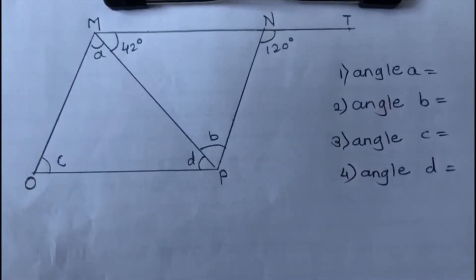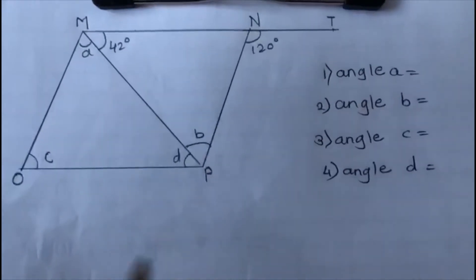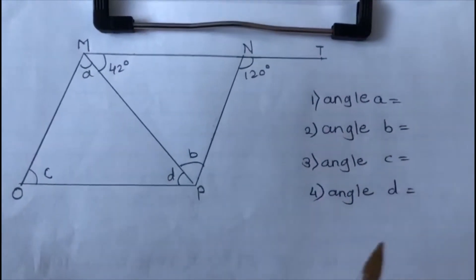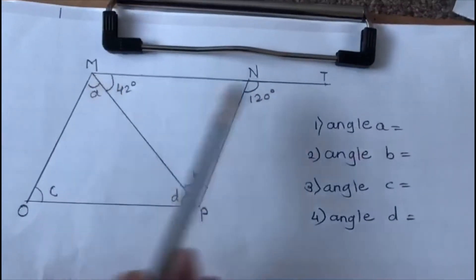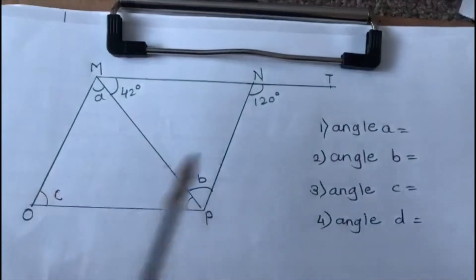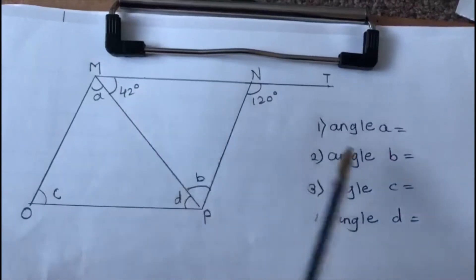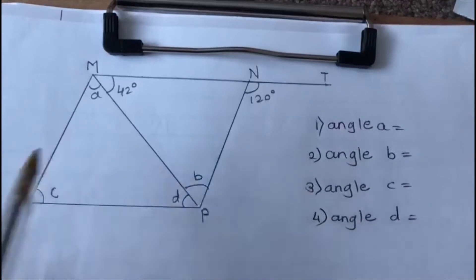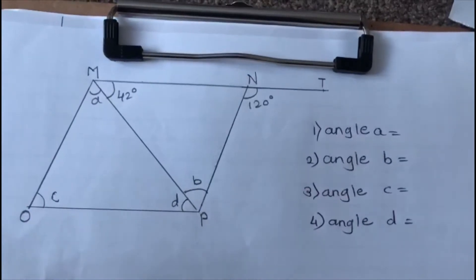Hello friends, today in this video we are going to learn about angles. You can see here a diagram is given and we have to find angle A, angle B, angle C, and angle D. This diagram is a parallelogram MNPO which doesn't have any right angles. Angle PMN is 42 degrees and angle PNT is 120 degrees, and we have to find the other four angles A, B, C, and D.